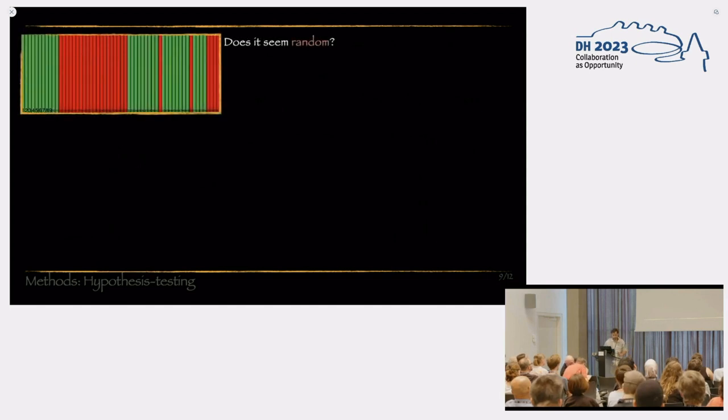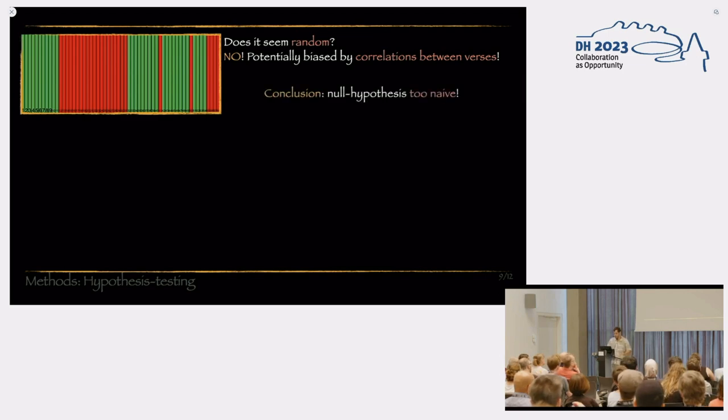However, here's a question to you. Does this labeling seem random to you? No, it doesn't, right? It's potentially biased by some correlations between the adjacent verses. If we have a block of verses that are talking about the same thing or have some genre-like proximity, then we get something like that, that a block of text are labeled red and some a block of text are labeled green. And the conclusion is that the null hypothesis where we just mess up with the labels is too naive. That's exactly the case that was presented in the workshop yesterday. That we get very good p-values even if we shouldn't.